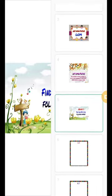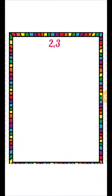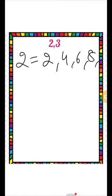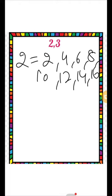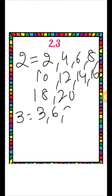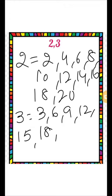The first question is: find the LCM of 2 and 3. First of all, write the multiples of 2: 2, 4, 6, 8, 10, 12, 14, 16, 18. Now write the multiples of 3: 3, 6, 9, 12, 15, 18, 21, 24, 27, 30.